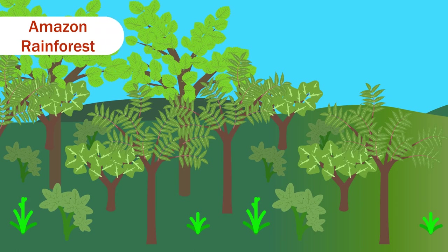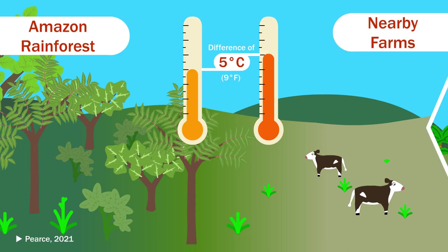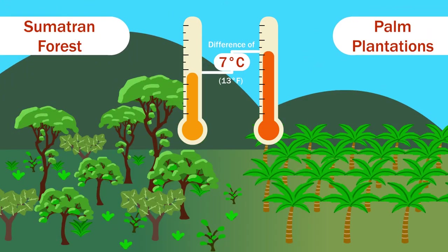On the edge of the Amazon rainforest, temperatures are consistently five degrees cooler than on farms just a short walk away. And in Sumatra, native forests have been measured to be ten degrees cooler than neighboring palm plantations.